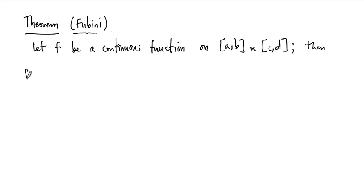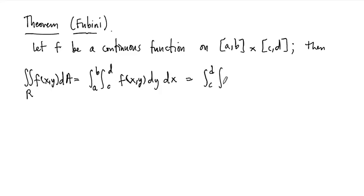Then the double integral of this function over R, f of x, y, dA, this can be computed as the iterated integral that we just wrote down: integral from a to b, then the integral from c to d on the inside with respect to y, then the integral with respect to x on the outside. Or it can be computed as the integral from a to b of f of x, y, dx first, and then that's on the inside, then on the outside integral from c to d, dy.